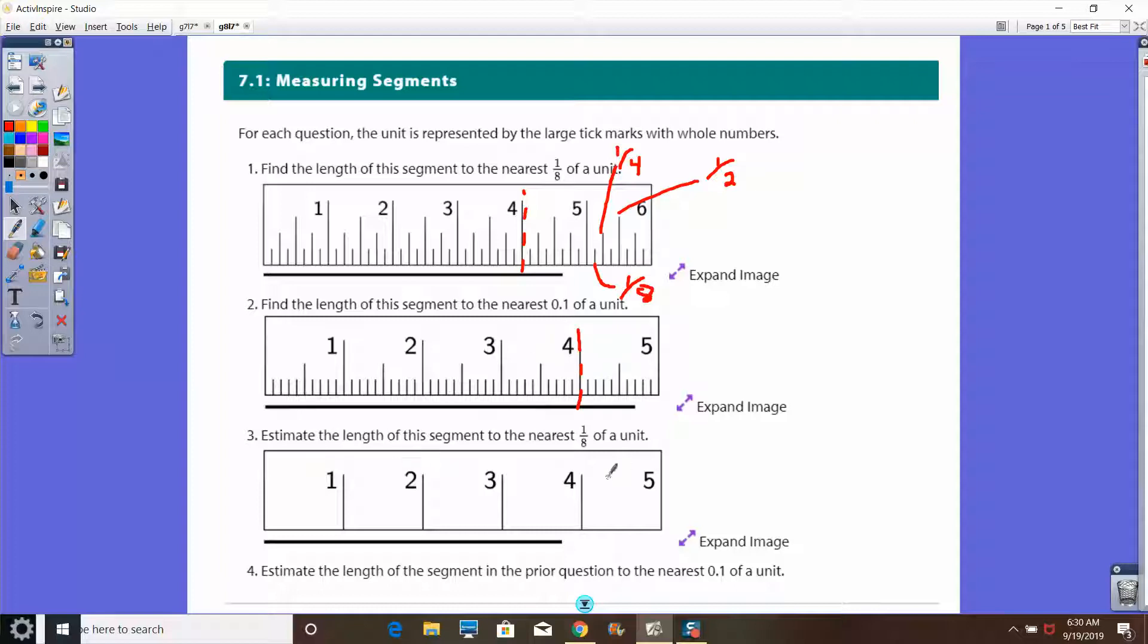With number three, your job is to estimate, and you're going to estimate nearest eighth and nearest 0.1. So in other words, if you have this mark here, about how many-eighths of an inch is this? Three and how many-eighths? And then for here, three and how many-tenths? Maybe you can even use the rulers that are almost directly above you to help you create that nearest tenth of a unit.